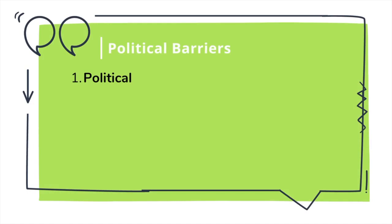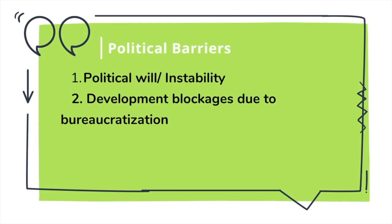The fourth and most important point that acts as a barrier towards development communication is the political barrier. Political barriers can further be divided into the political will of politicians and the instability that political parties create within the country, so that any development activity can be used for sustaining it.